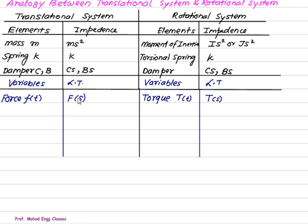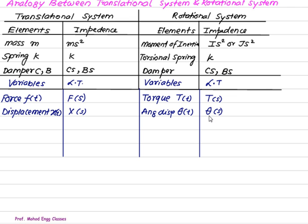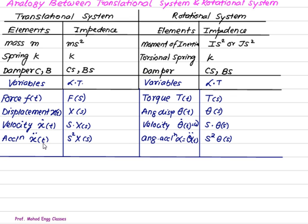Now for the variables and their Laplace transforms: in the translational system, force f(t) has Laplace transform F(s); in the rotational system, torque T(t) has Laplace transform T(s). Displacement x(t) corresponds to angular displacement θ(t) with Laplace transforms X(s) and θ(s). Linear velocity ẋ(t) has transform sX(s), and angular velocity θ̇(t) = ω has transform s·θ(s). Acceleration ẍ(t) has transform s²X(s), and angular acceleration α has transform s²θ(s).